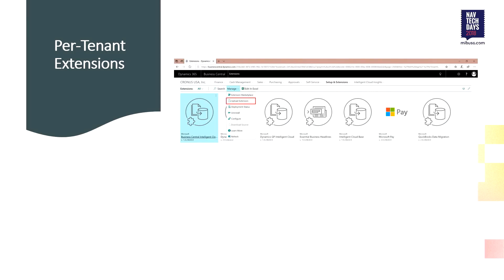If you haven't seen per-tenant extensions yet, in the extension management page there is a new option called Upload Extensions. If you click on that, you can point to the .app file that you've built and upload it. It doesn't go through AppSource and is only available to that tenant that you're working with.